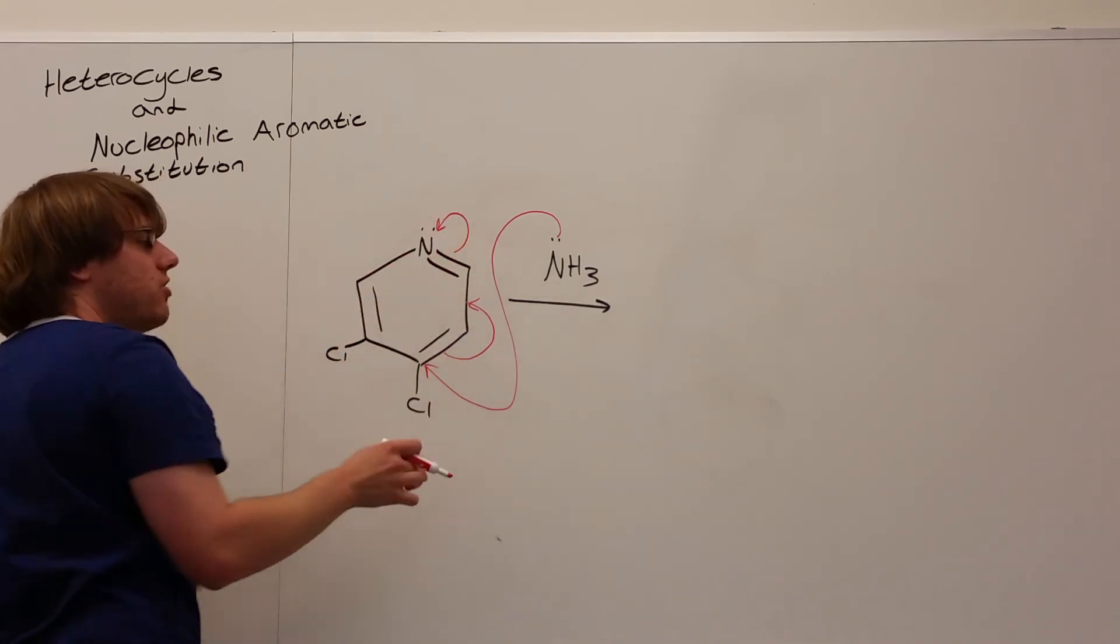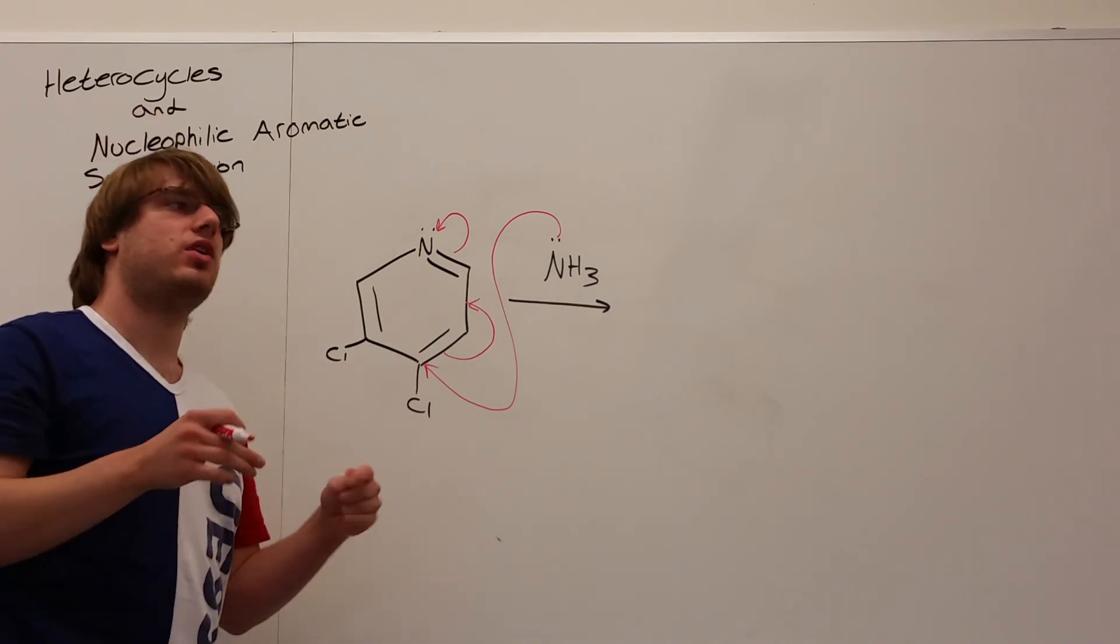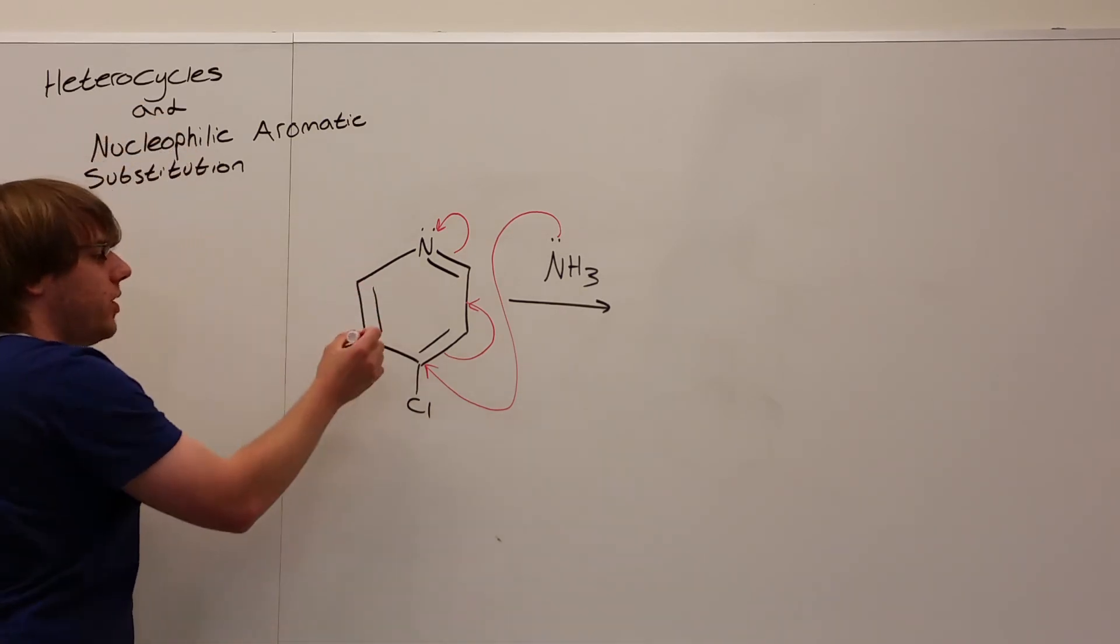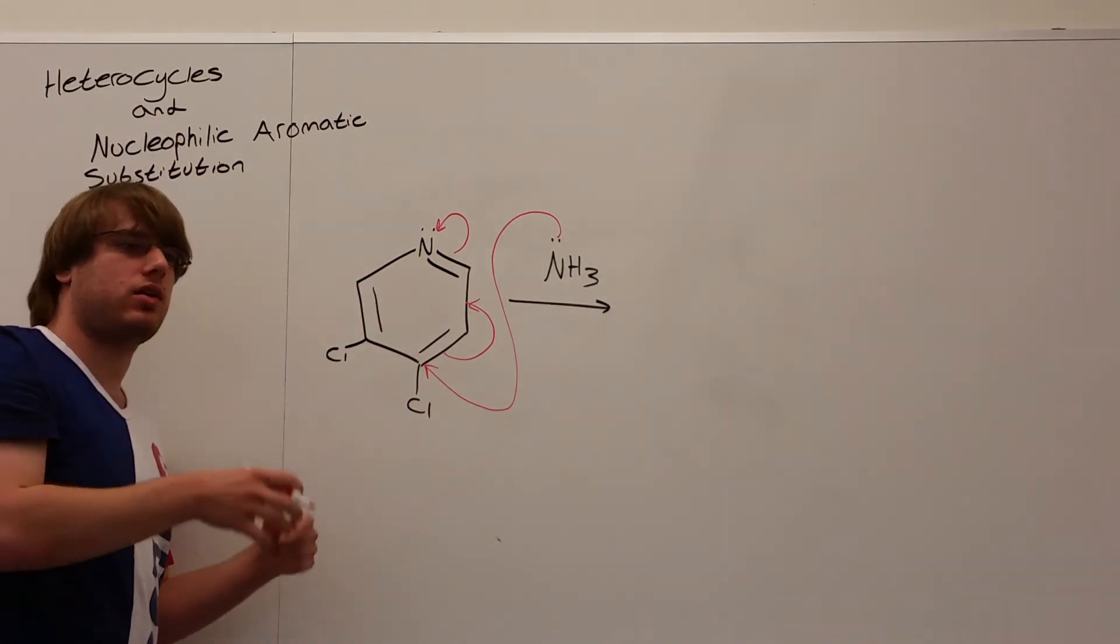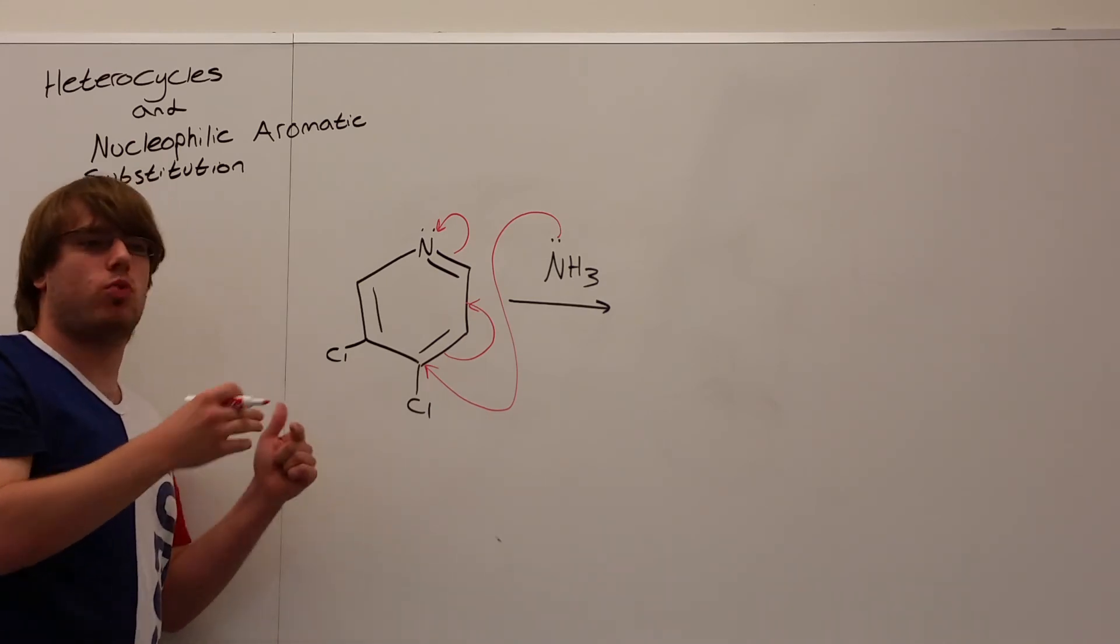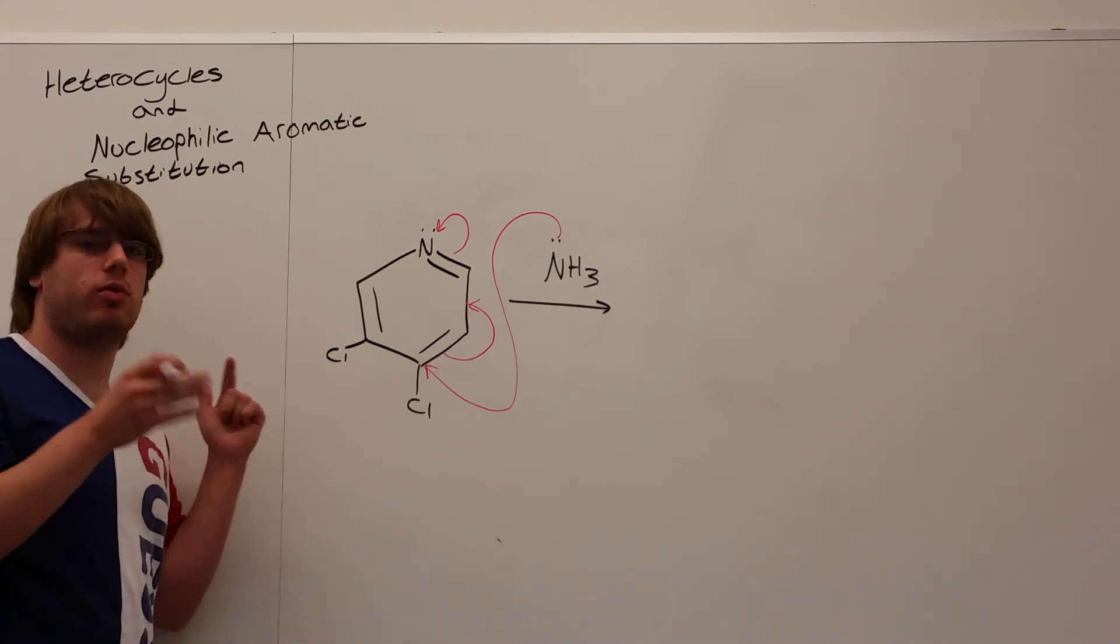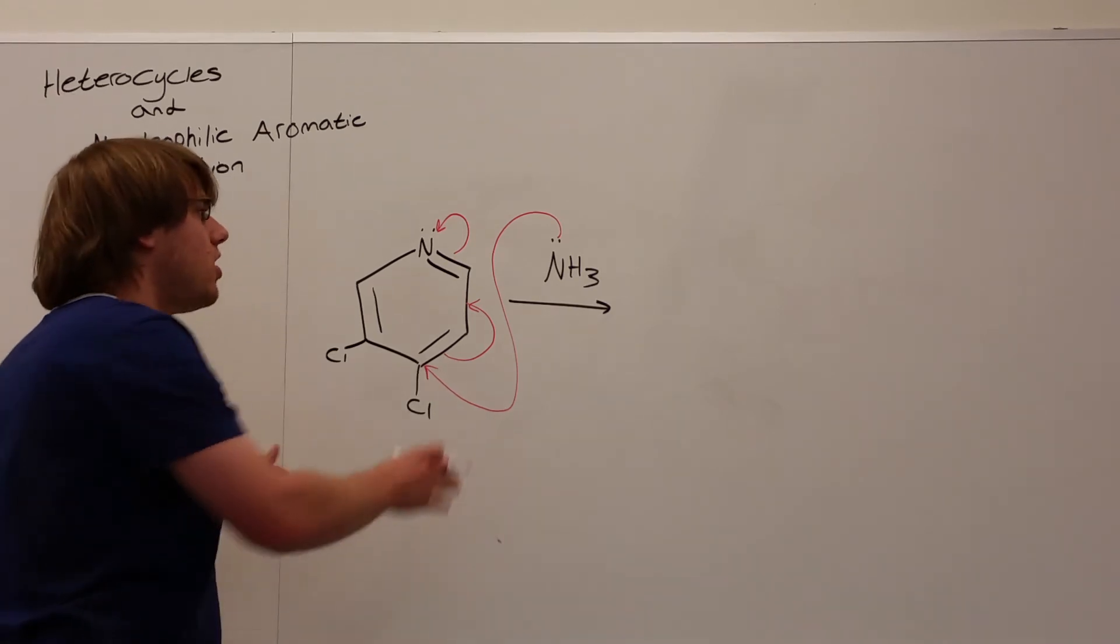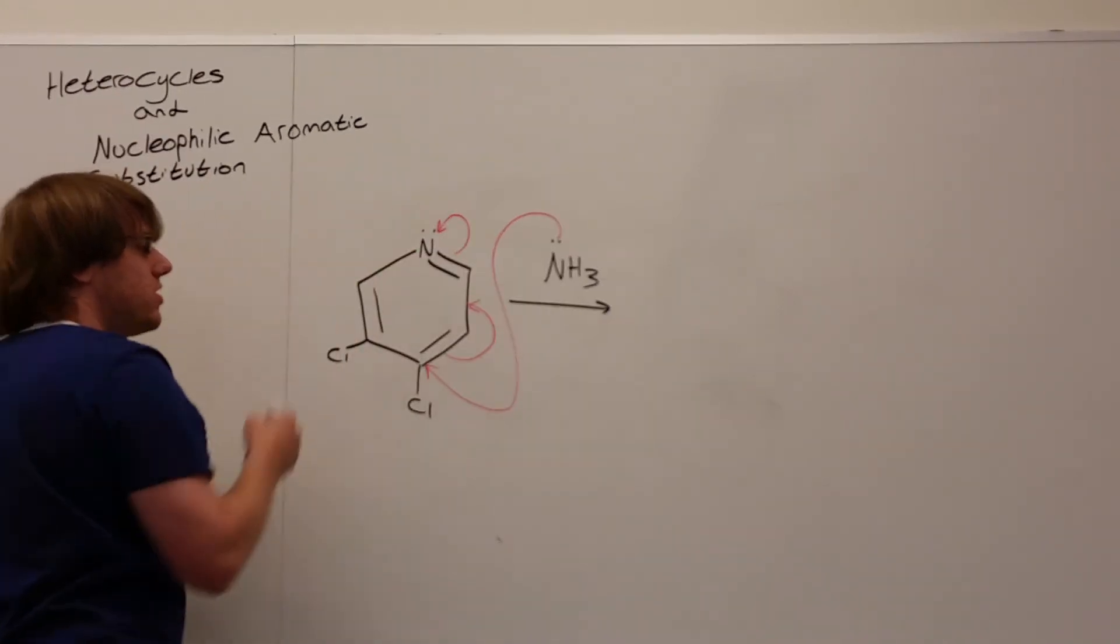We want that negative charge to get on the nitrogen for this reaction to work because if we resonated it further, we'd end up getting a carbon minus and comparing carbon minus to N minus. We know nitrogen is more electronegative and therefore it's the more stable and more important resonance structure. So long story short, just make sure you resonate to the nitrogen in the ring.